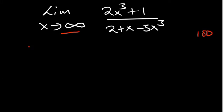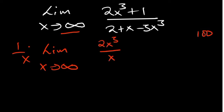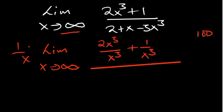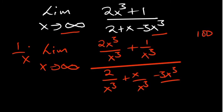We use that same concept to answer this problem. We need to express the function in the form of 1 over x, so we divide by the highest power. The highest power is x cubed. On the numerator we divide each term by x cubed: 2x cubed over x cubed, and 1 over x cubed. The same applies to the denominator — we also divide each term by x cubed: 2 over x cubed, x over x cubed, and negative 3x cubed over x cubed.